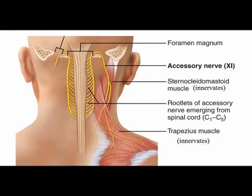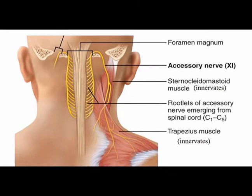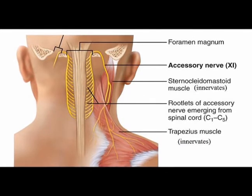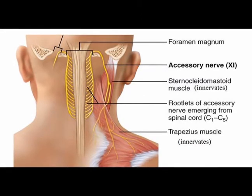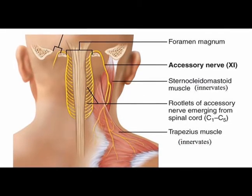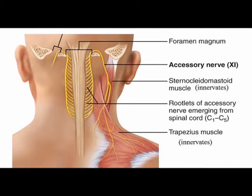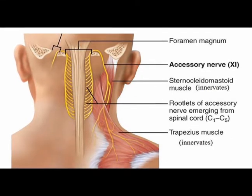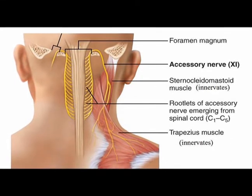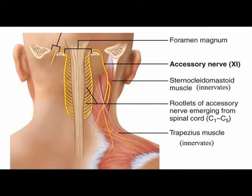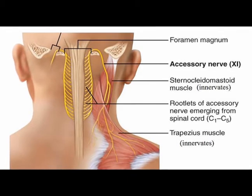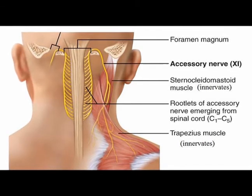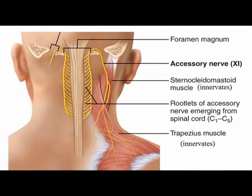The motor innervation of the sternocleidomastoid is the spinal accessory nerve, which is cranial nerve number 11. And the sensory innervation of the sternocleidomastoid is the ventral rami of C2 and C3.